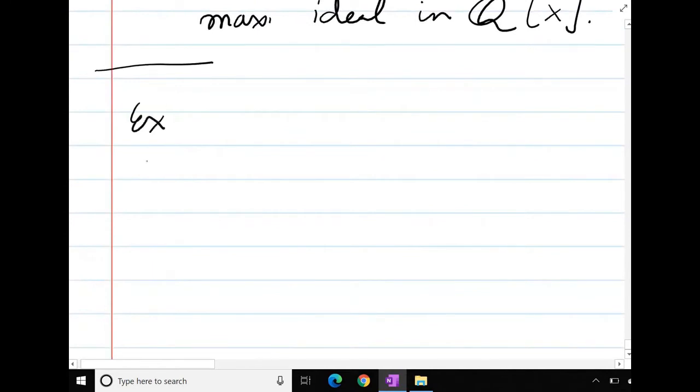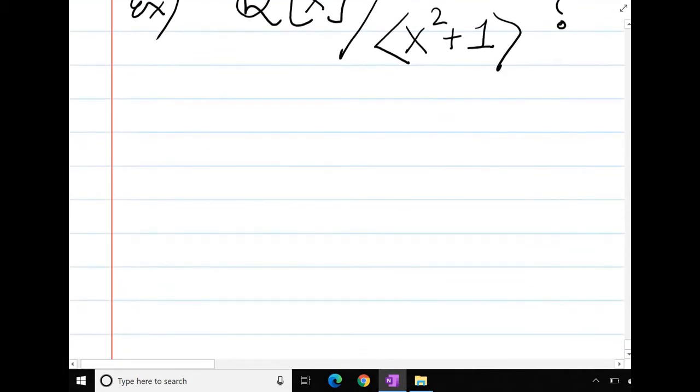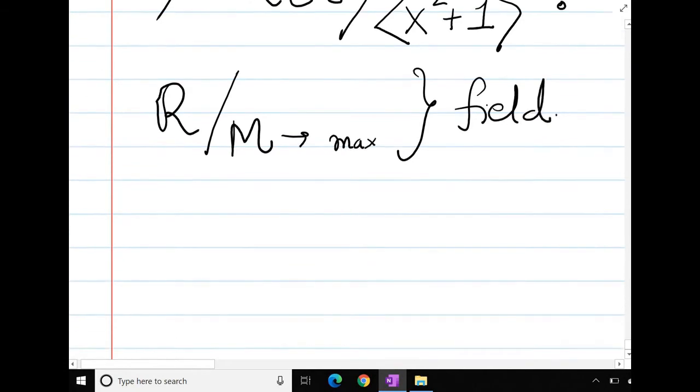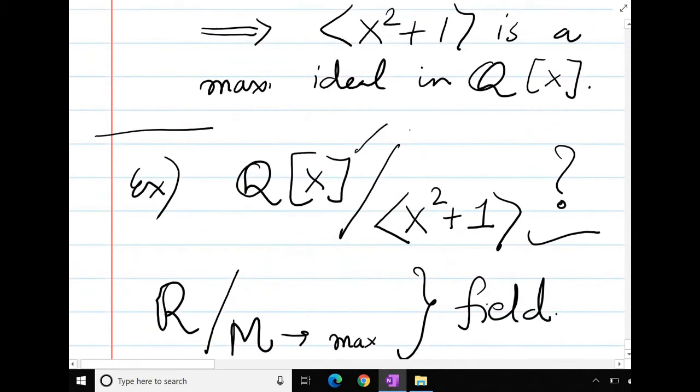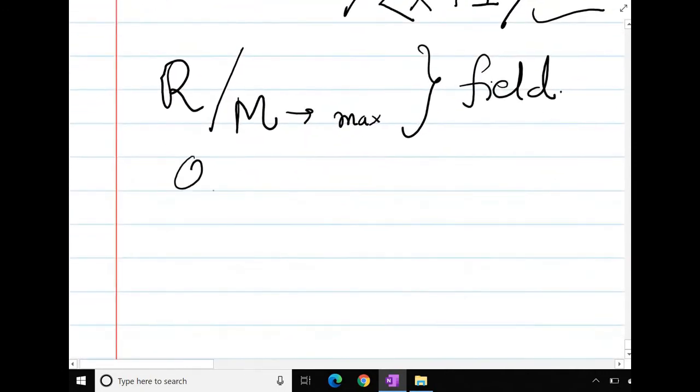Now what this helps is, if I am looking at Q[x] quotient (x squared plus 1), what can I say about this? We know that if R is a ring and if M is maximal, this R by M becomes a field. So here x squared plus 1 is maximal, so Q[x] over x squared plus 1 will become a field.